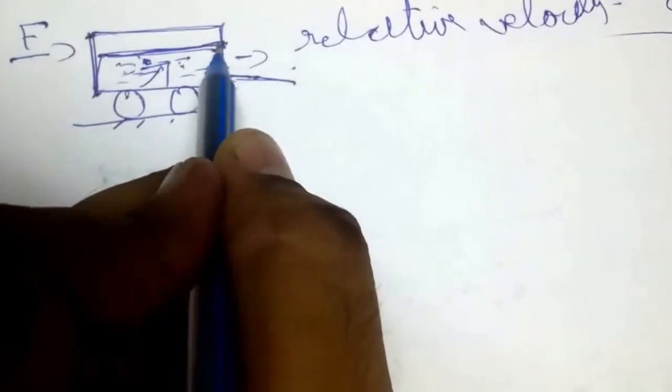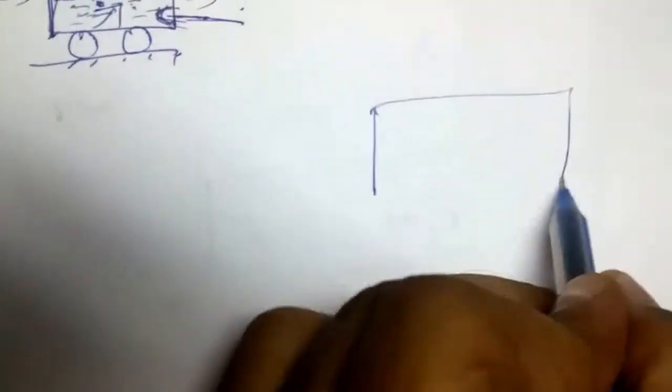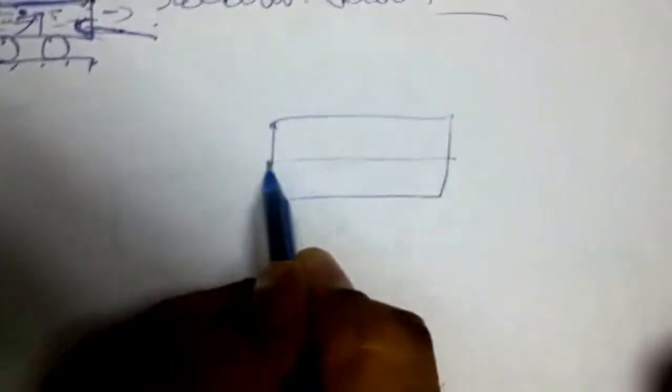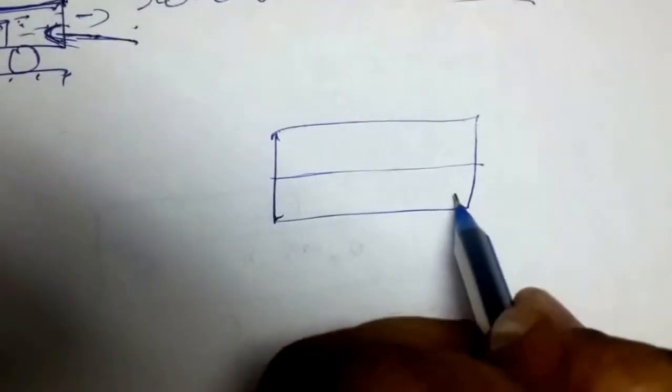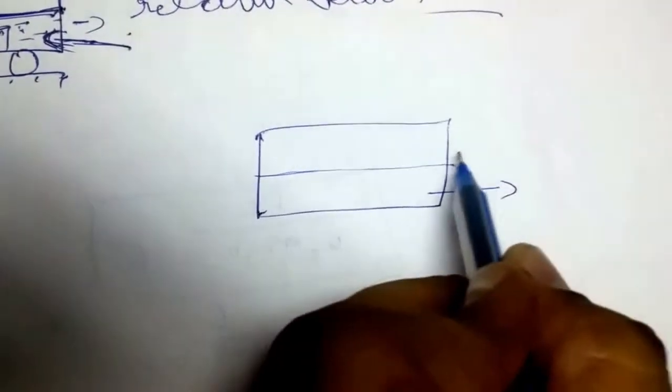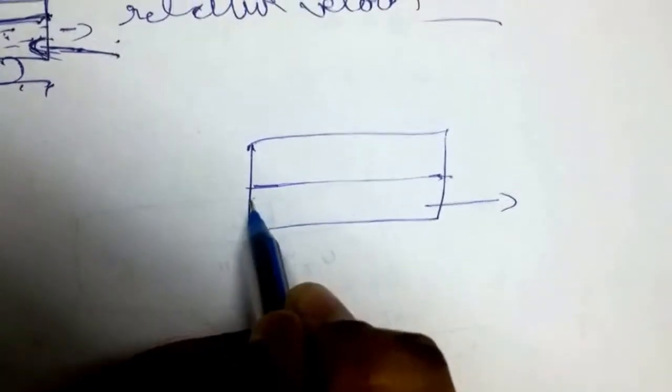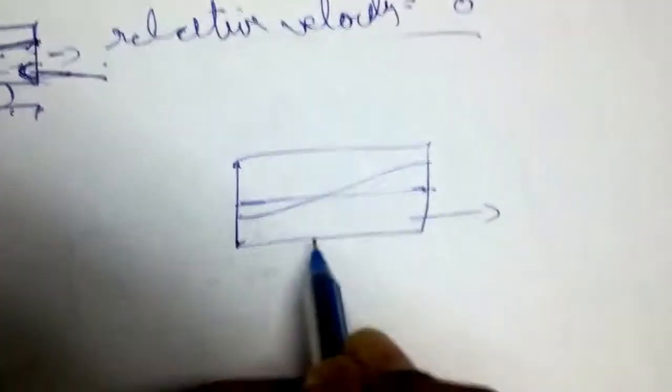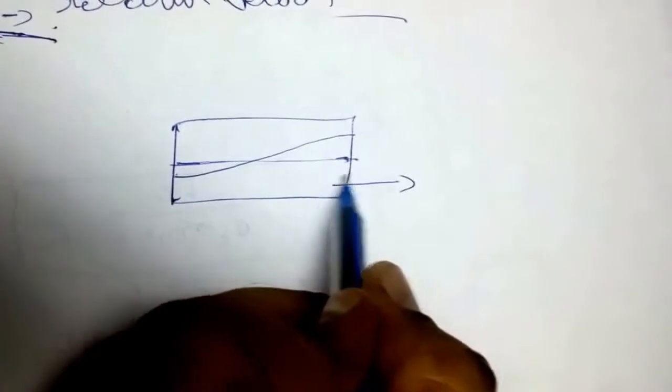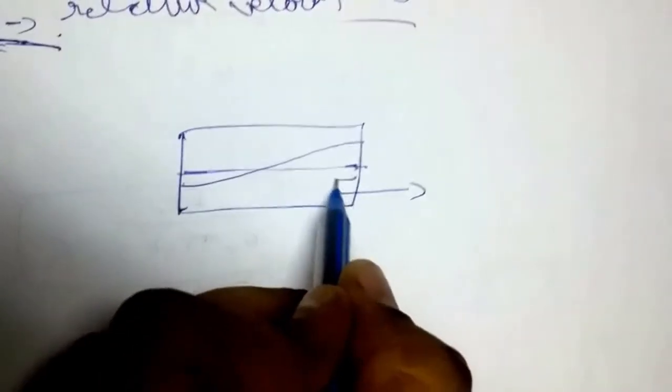Say for example, if this is the block and this is the original position of water, now if the driver applies brakes, then water will tend to achieve this shape inside the block. Or if he applies acceleration, then more of the water may be concentrated on this position.